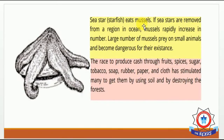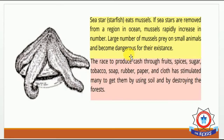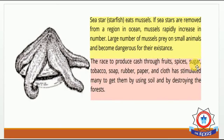دوسری مثال: sea star (starfish) mussels کو کھاتی ہے۔ اگر کسی سمندری علاقے سے sea star کو ختم کر دیا جائے تو mussels کی تعداد بہت زیادہ بڑھ جائے گی اور یہ mussels دوسرے چھوٹے جانوروں پر حملہ کریں گے جس سے ان چھوٹے جانوروں کا وجود خطرے میں پڑ جائے گا۔ یعنی ایک species کے introduce یا remove ہونے سے دوسری species کے لیے خطرہ بڑھ جاتا ہے۔